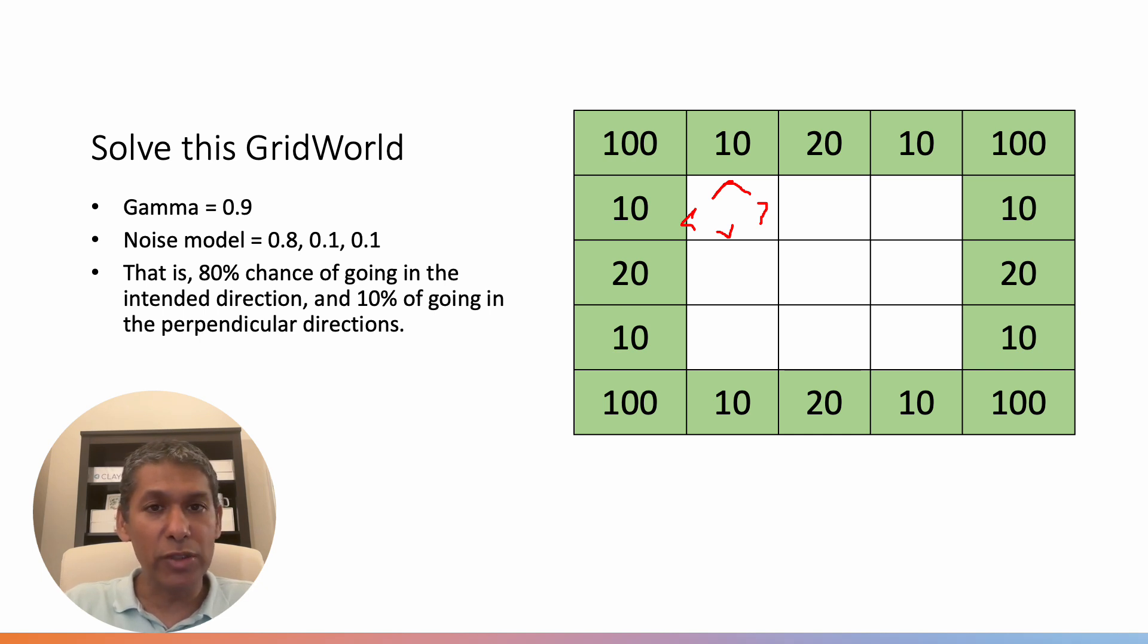So that's the GridWorld we're trying to solve. In this GridWorld, the noise model given is 0.8, 0.1, 0.1. So if I'm in this state and I try to go this direction, there's an 80% chance of going in that direction, but 10% I might go this way, 10% I might go that way. And the gamma is given 0.9, so that's the discount ratio as well. Now the question here is, how do we find the V star values for each of these nine states here?